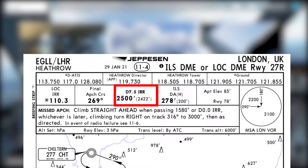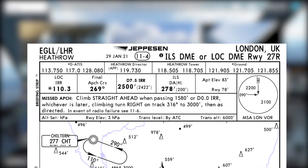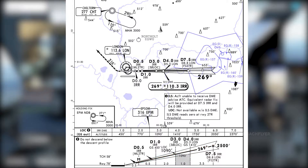Expect to intercept the localizer and glideslope at 2,500 feet. We have our decision altitude of 278 feet, airport elevation 83 feet, runway elevation 78 feet. Looking at the profile, it seems very easy — we expect to descend to 2,005 feet and are not allowed to descend until fully established on the localizer and glideslope. We must make sure we are well established on the localizer before descending on the glideslope.